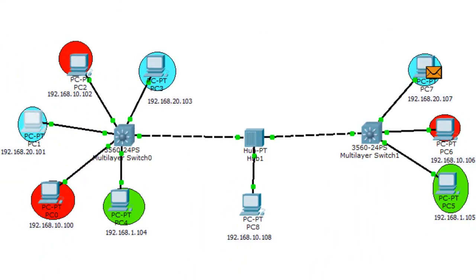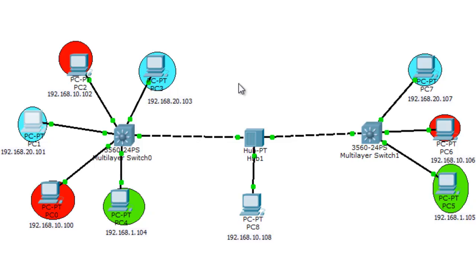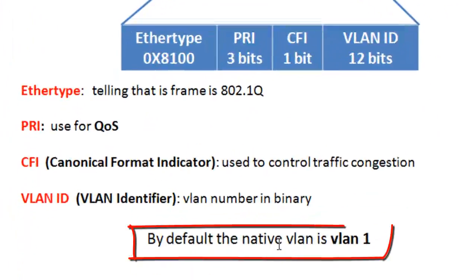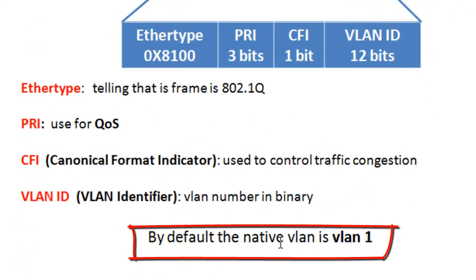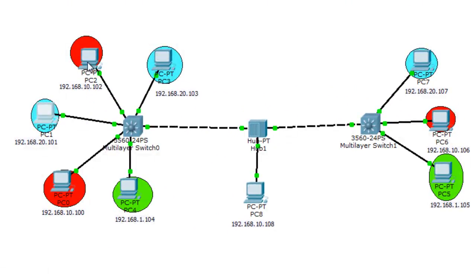Now I want to talk about native VLAN. The native VLAN is a VLAN whose frames the switch does not tag. A frame coming from the native VLAN is not tagged with an 802.1Q tag. Keep in mind that by default the native VLAN on any switch is VLAN 1, unless you change it. The trunk port will be set to this native VLAN, which is VLAN 1 by default.